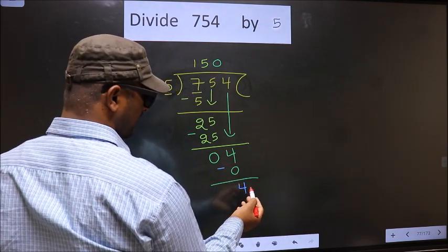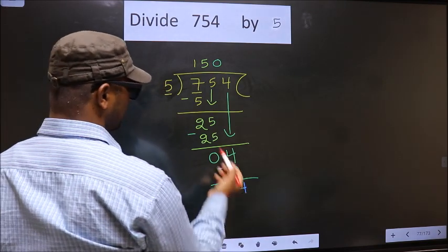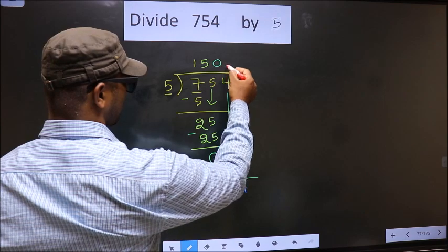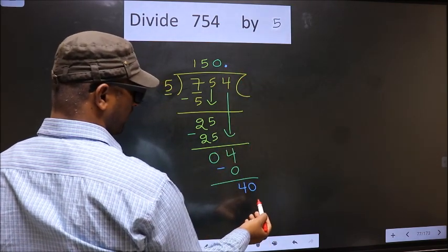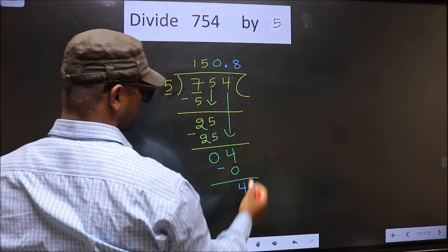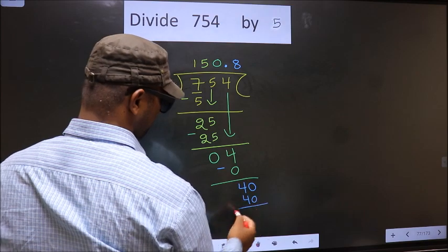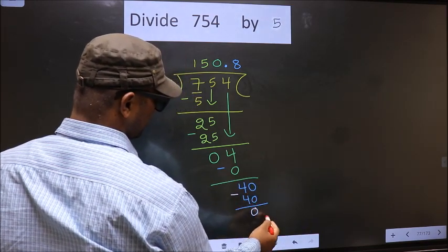Over here we did not bring any number down. And 4 is smaller than 5. So now you can put a dot and take 0 here. So now 40. When do we get 40 in 5 table? 5 8 is 40.